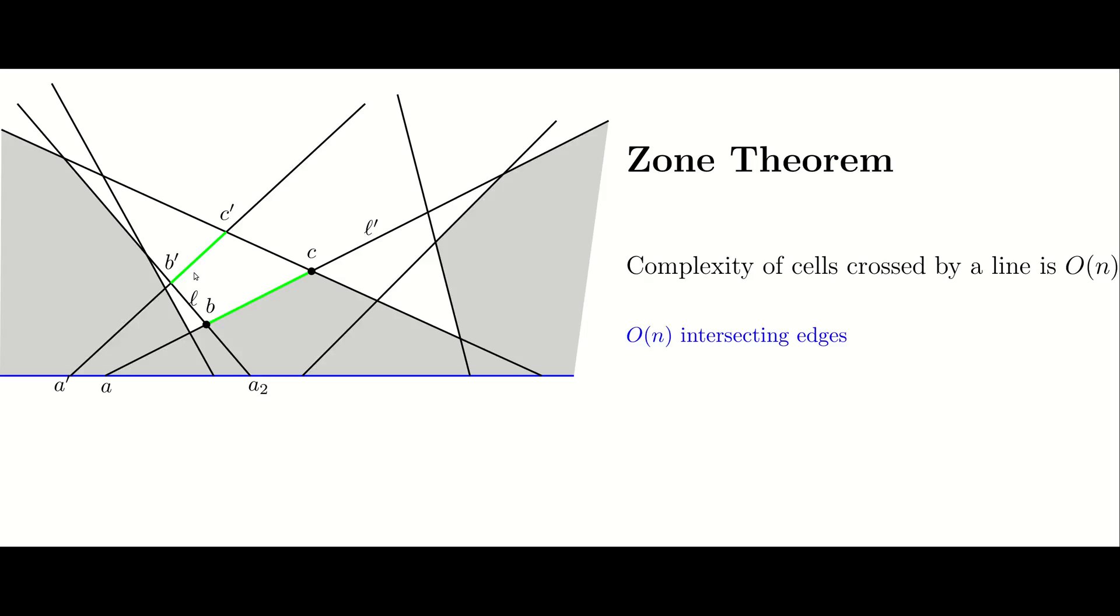intersects L at point B' and creates a segment B' C'. We'd like to show that the segment B' C' cannot be part of the zone.